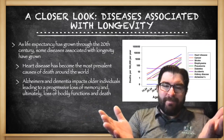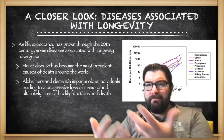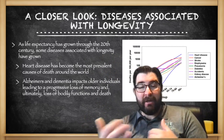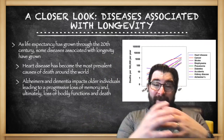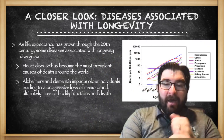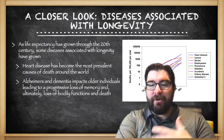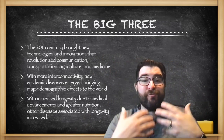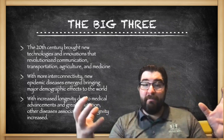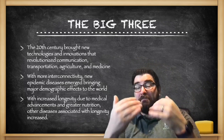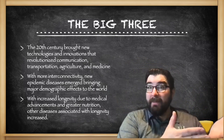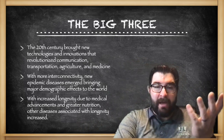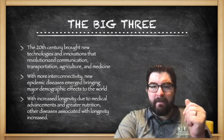Diseases associated with longevity: as life expectancy has grown, we now deal with more diseases connected to old age. Heart disease is the world's most prevalent cause of death today. Alzheimer's and dementia impact older individuals, leading to progressive loss of memory and ultimately loss of bodily functions and death — diseases that weren't a major factor in earlier generations because people simply didn't live that long. The 20th century brings new technologies and innovations that revolutionize communication, transportation, agriculture, and medicine. With more interconnectivity, new epidemic diseases bring major demographic effects, and with increased longevity, diseases associated with aging are growing in the developed world and increasingly in the developing world as well.